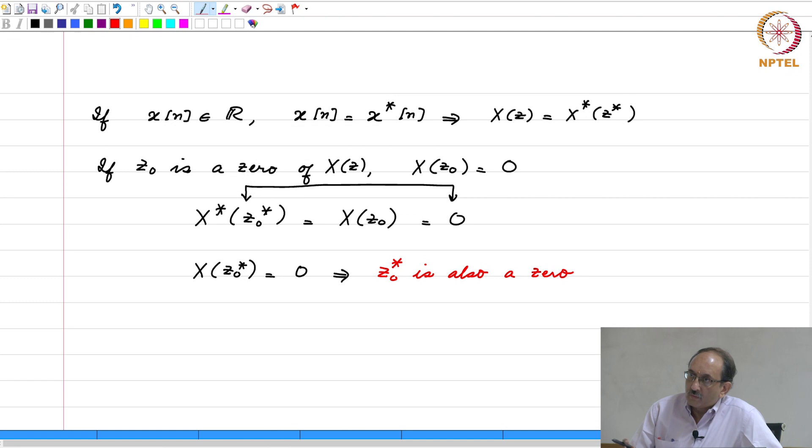Therefore, if the sequence is real valued, its Z transform will have poles and zeros that are complex conjugates of each other. So, this argument applies also for poles as well, because you can write X of z as P of z over Q of z and this is the same as P star of z star over Q star of z star.